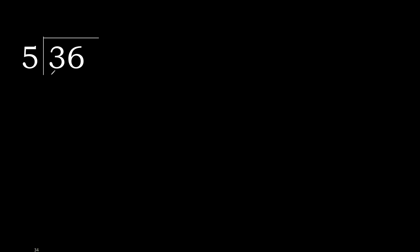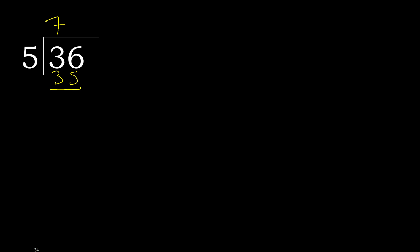36 divided by 5. 3 is less, therefore next. 36 is not less, therefore with 36. 5 multiplied by which number is nearest to 36 but not greater? 5 multiplied by 8 is 40 — 40 is greater, therefore multiply by 7. 5 multiplied by 7 is 35, which is not greater. 36 minus 35 is 1. Next.